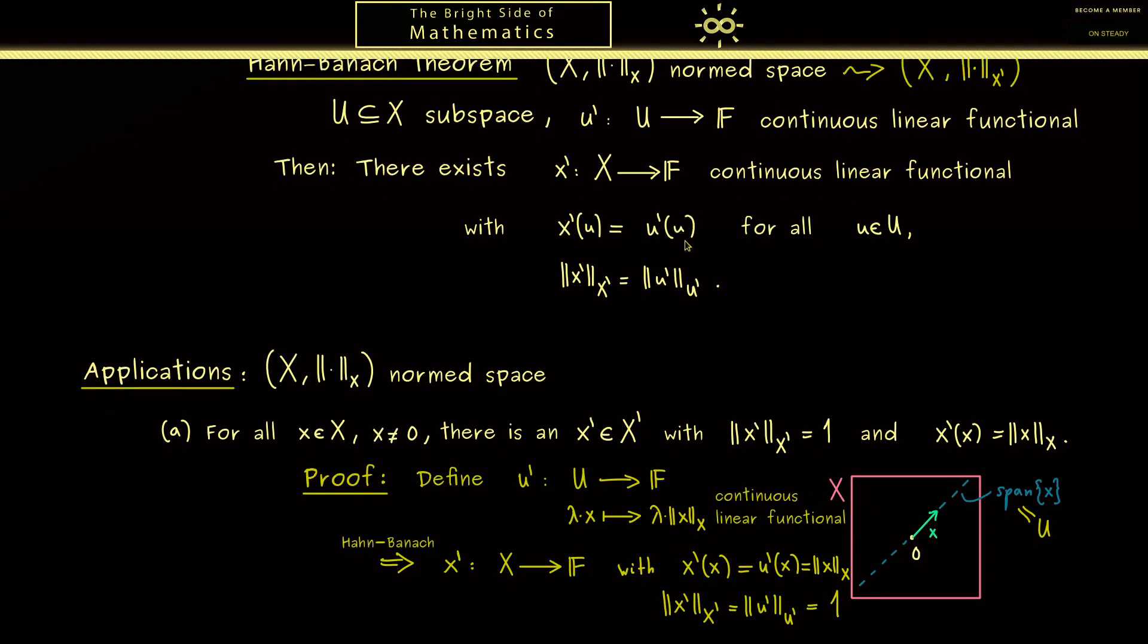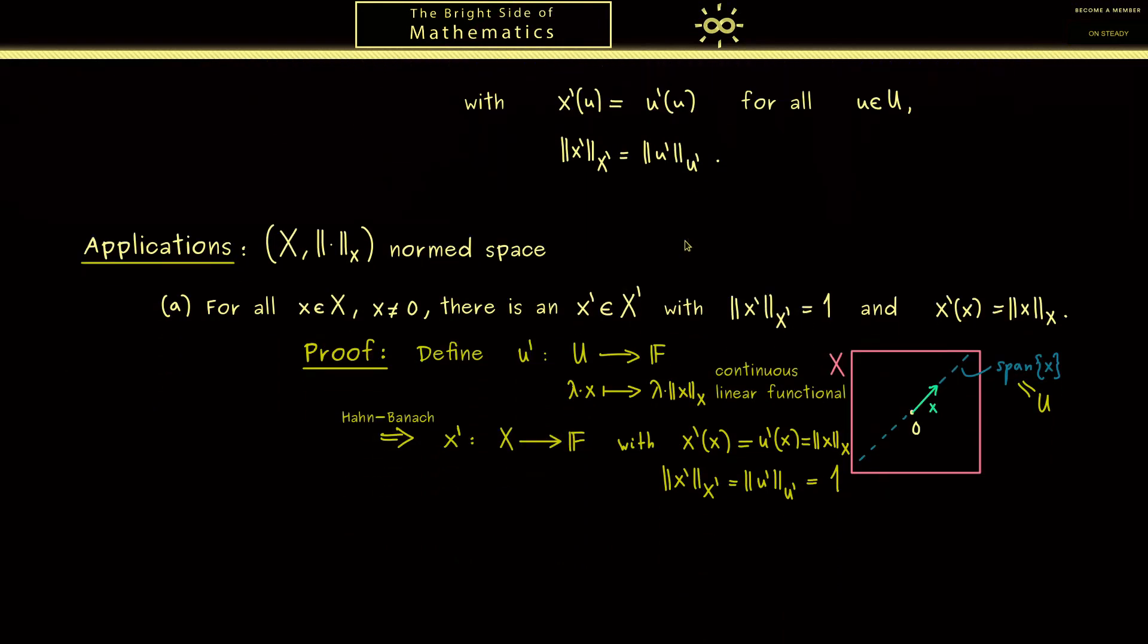Now using (a) we can immediately show the next important fact. It tells us that the dual space X' separates the points of X. This simply means that for two different points x₁, x₂ we always find a functional x' with different values for x₁ and x₂. So x'(x₁) ≠ x'(x₂).